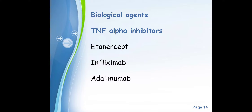To summarize the non-biological agents: methotrexate and azathioprine are immunosuppressors, while sulfasalazine, hydroxychloroquine, and leflunomide are immunomodulators — they modulate immunity rather than suppressing it entirely. Now moving to biological agents, which are also part of the DMARDs group but are recombinant proteins or monoclonal antibodies of biological origin.